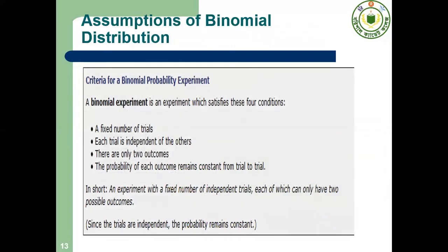Dear cadets, there are some assumptions of binomial distribution. Number one: the number of trials is fixed, that is n < 30. Number two: each trial is independent of each other. Number three: there are two outcomes, that is success and failure.